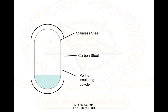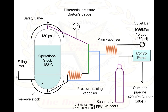If you look at the vacuum insulated evaporator, it is basically like a flask. We have an inner flask which contains the liquid oxygen, made of stainless steel, and then an outer part made of carbon steel. There is a vacuum between them packed with something called perlite, which is an insulating powder. There is a filling port for the liquid oxygen, an operational stock and a reserve stock of liquid oxygen. This is held at minus 183 degrees Celsius and the gaseous form is at 180 psi.